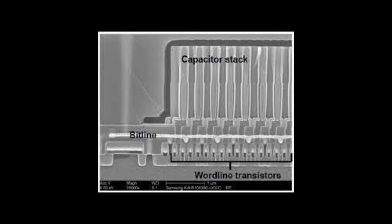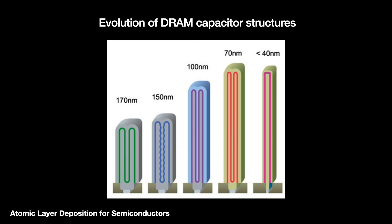Modern dynamic RAM cells have a transistor and a capacitor. The latter carries a charge which represents either a 1 or a 0. But as those cells have scaled down in size, the capacitor has gotten taller and skinnier. Some of the films in these capacitors necessary for the capacitor to hold its charge measure just 6 to 8 nanometers. Considering the thinness of the film and the skinniness of the capacitor, ALD works perfectly.